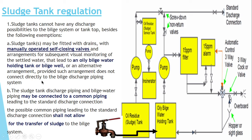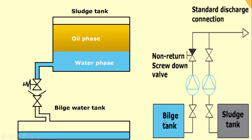The second question often asked is: can you have a common connection between the sludge tank and the bilge tank? The answer is no. You cannot have a common connection between the bilge tank and the sludge tank internally. But you can have a common standard discharge connection for the shore. Please mark my words — you can have a common standard discharge connection for the shore between the bilge tank and the sludge tank, but internally you cannot have it.